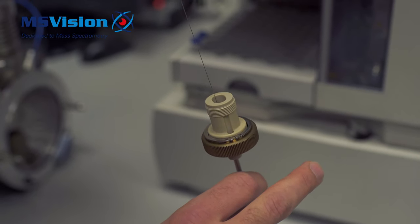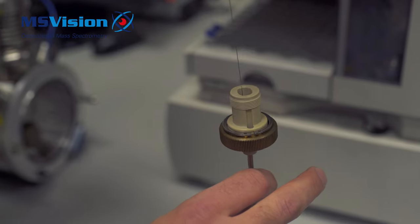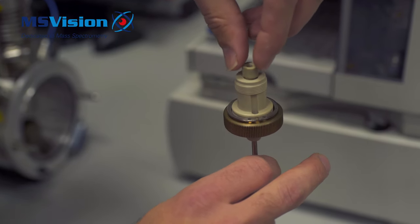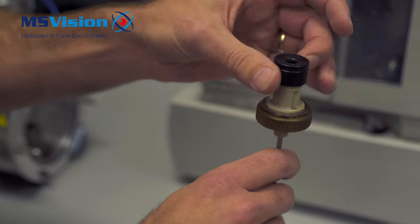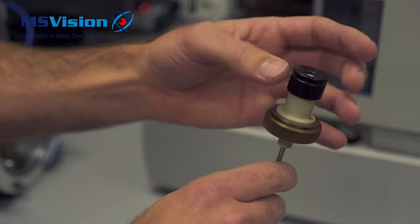Replace the spring into the top of the probe and then reinsert the capillary into the probe, being careful not to bend the capillary. Replace the black cap but don't fully tighten it.